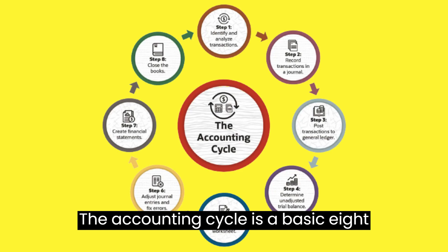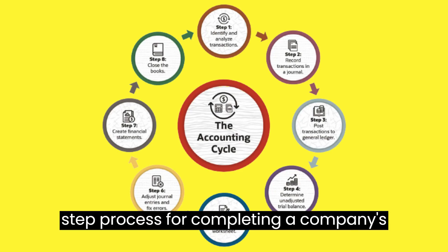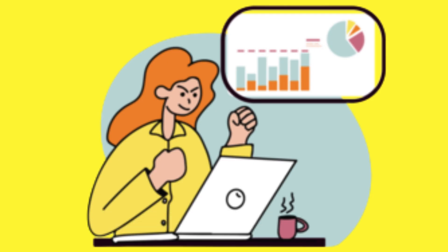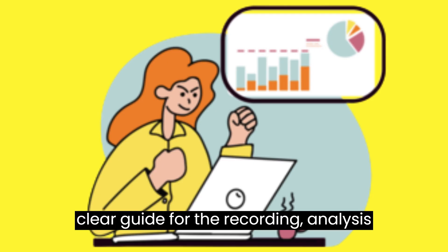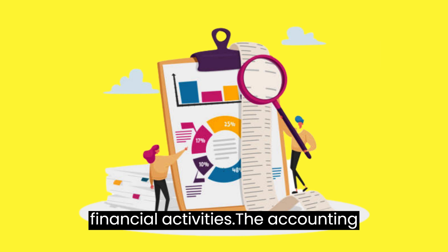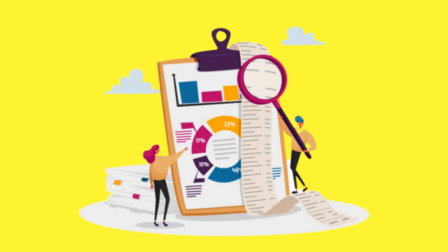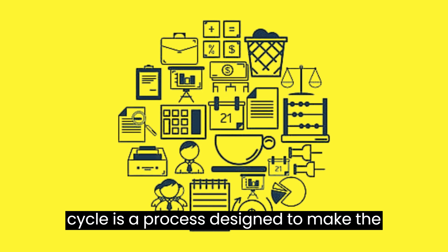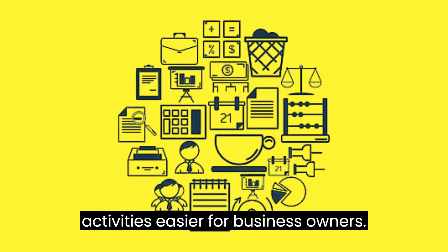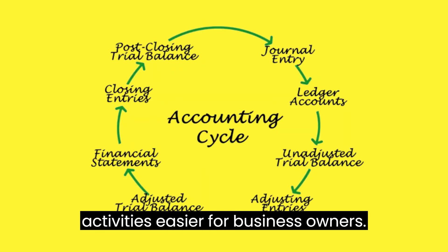The accounting cycle is a basic eight-step process for completing a company's bookkeeping tasks. It provides a clear guide for the recording, analysis, and final reporting of a business's financial activities. The accounting cycle is a process designed to make the financial accounting of business activities easier for business owners.